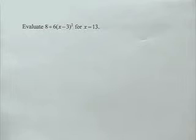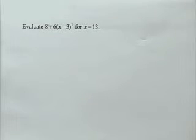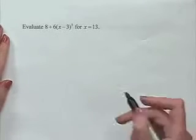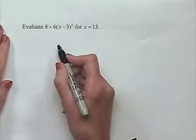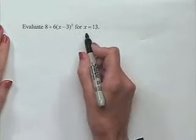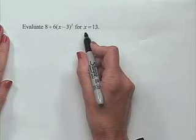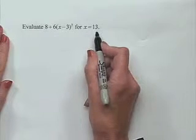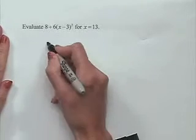Now let's take a look at the following algebraic expression. Evaluate 8 plus 6 times x minus 3 squared for x equals 13. We'll evaluate this by making a substitution wherever we see the x, replacing it with 13 instead.